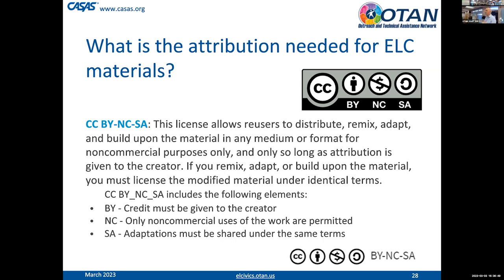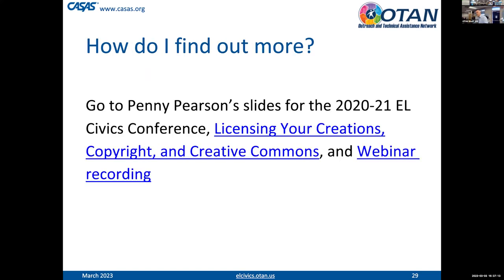Basically, what we're asking you to do is add the Creative Commons license — CC BY-NC-SA — to your materials. All you have to do is copy that license graphic and make sure it's added to your materials so it's clear that this is the license for these materials specifically. We do have some additional resources that give you more information about the licensing process — what it means, making sure you're not using copyrighted materials, and so on. We'll put the link to the slides in the chat so you can take a look at them at your leisure.